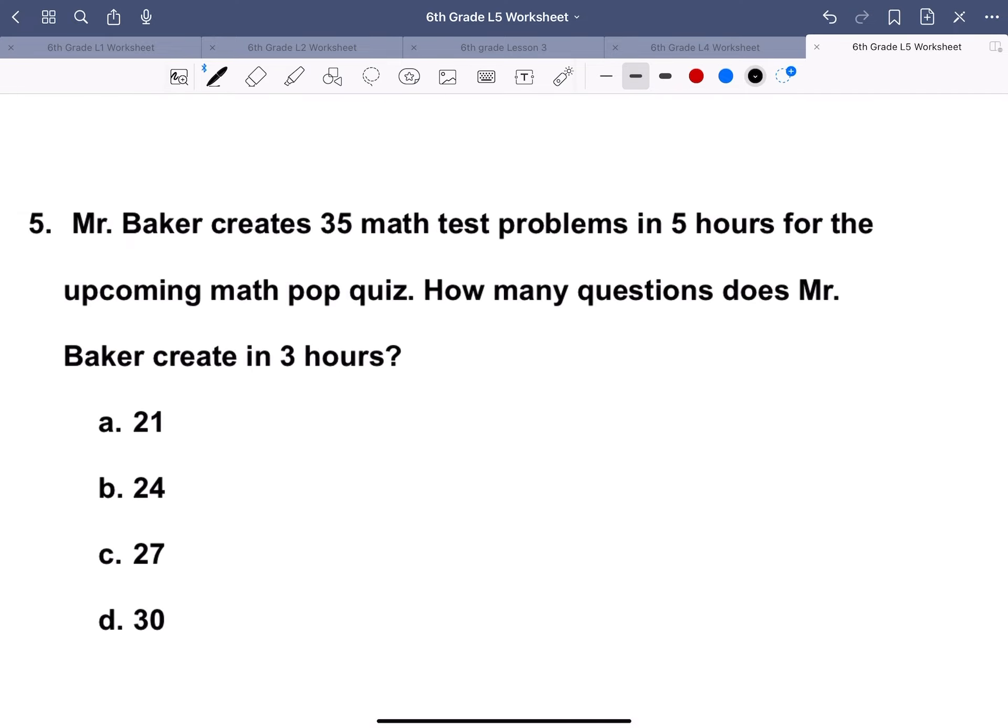Our last page and last two problems. Number 5: Mr. Baker creates 35 math test problems in 5 hours for the upcoming math pop quiz. How many questions does Mr. Baker create in 3 hours? To solve this, we just need the rate of questions he makes in one hour. So we go 35 over 5, because we want the number of problems and hours on here. We know that this equals 7, so the rate at which he makes problems in one hour is 7 questions. With that, we just have to multiply 7 by 3 to get 21.